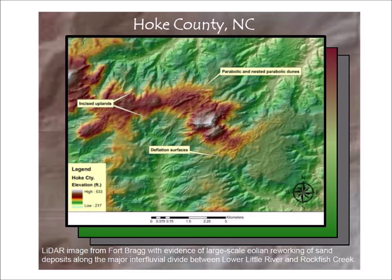Moore and Brooks provide a LiDAR image from Fort Bragg with evidence of large-scale aeolian reworking and sand deposits along the major interfluvial divide between Lower Little River and Rockfish Creek. The image is labeled with parabolic and nested parabolic dunes, as well as surfaces deflated by wind erosion.